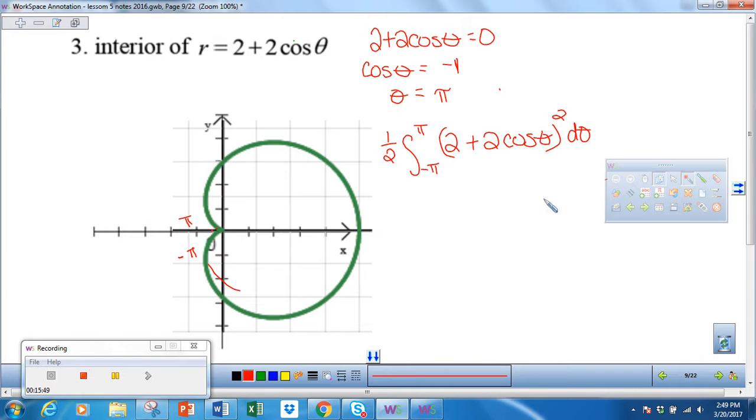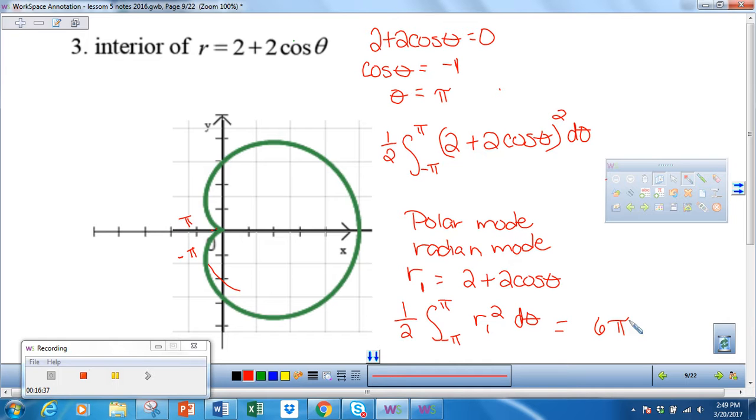This is a lot of work, and I don't want to work that hard, so I'm going to use my calculator. The best way to do this on your calculator is to be in polar mode and radian mode. When you go to y equals, it gives you r, so you put this in r1. Then on your calculator, integrate one half times the integral from negative π to π of r1 squared dθ. It should spit out a nice, pretty answer. I think you got it in decimal, but it ends up being 6π. You got 18 point something, but if you divide what you have by π, you can see that it's 6π.